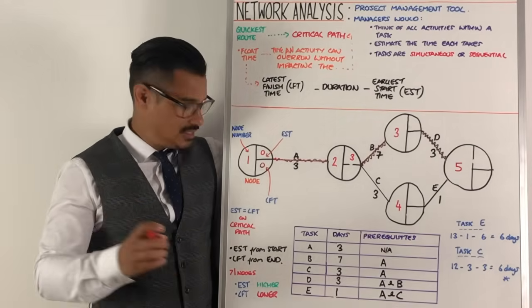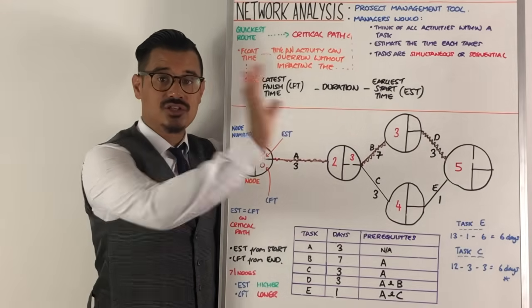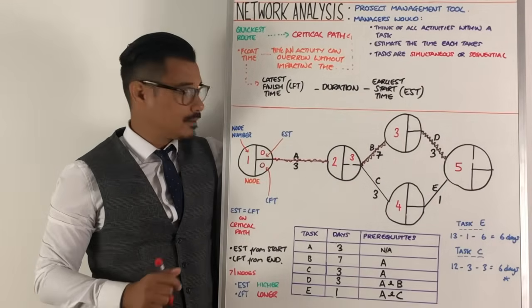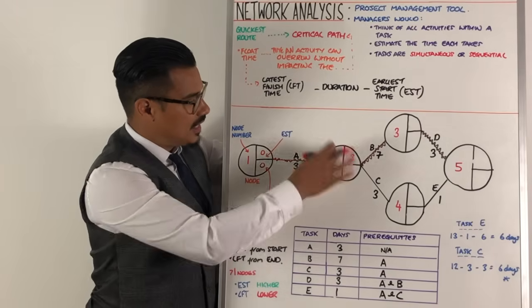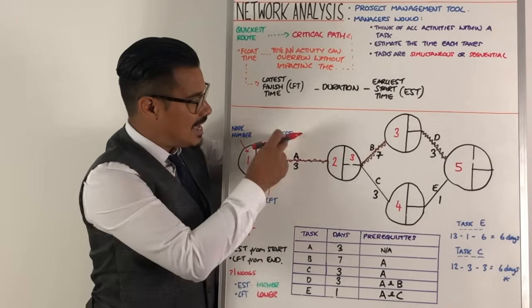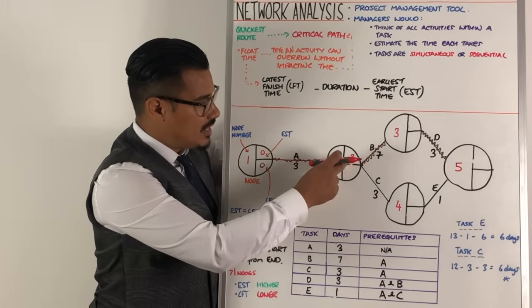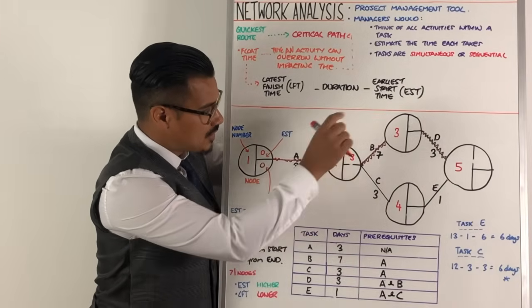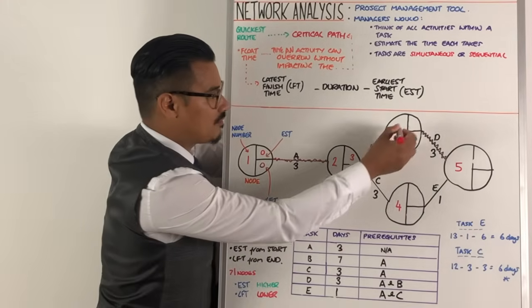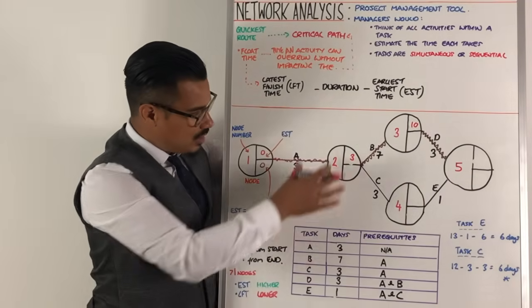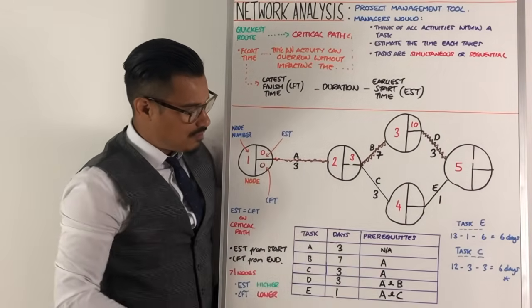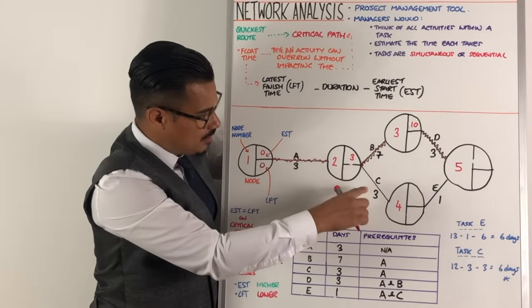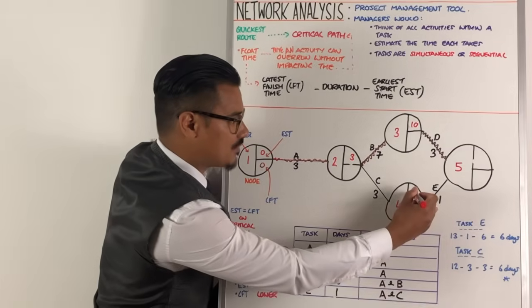The key thing to recognize with network analysis diagrams is that when you're calculating the EST, you move from start to end. And when you calculate the LFT, you move from end to start. So zero plus three, because task A is three days, it came to three. Now we're going to calculate the EST, the earliest start time for node three. Node three is being connected by task B here. And B lasts seven days, and it can't happen until A is finished. So A is finished now at node two. So we start B. And three plus the length of time that takes is seven. Three plus seven is 10. Then if we go the other way, because B and C both need A to have completed, so they could theoretically work simultaneously, then we can do for C. So three plus the length of C is three. So three plus three is six.